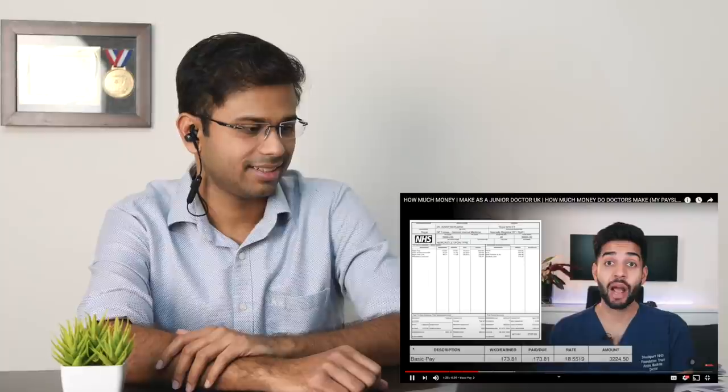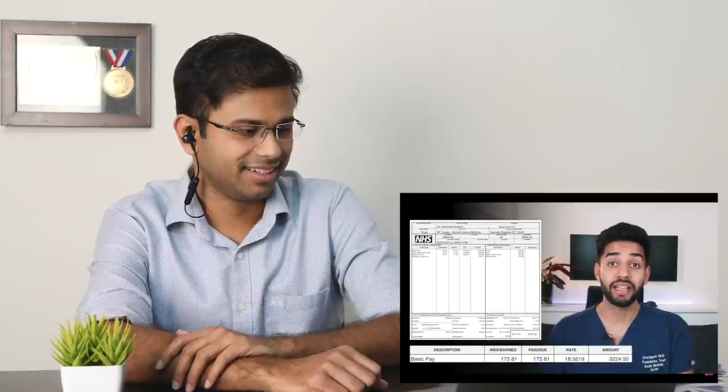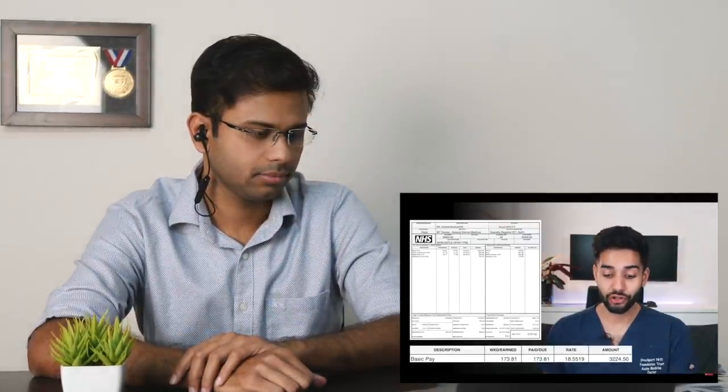I did 173 hours this week at basic pay, which is £18.55, which is quite a lot more than I was being paid when I was in my foundation years. 173 hours at £18.55 comes to £3,224.50. I obviously had to read that because I couldn't remember that number. I also do some additional hours, which are part of my rota. So I have no choice. I have to do them, but they're outside of the 9-5. They're also paid at £18.55. So I did 21.7 of these extra hours. Therefore, I earned another £403.